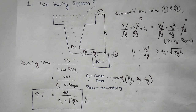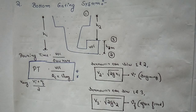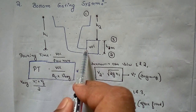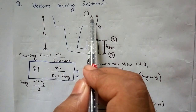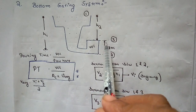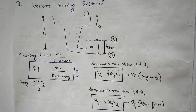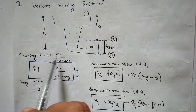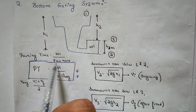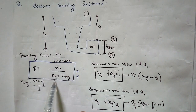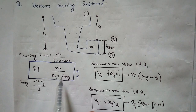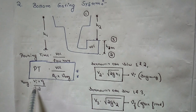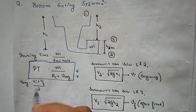Now for the bottom gating system — everything is similar except the ingate enters from the bottom of the mold cavity. The height from the top of the mold cavity to section 1 is h1, the height from the datum to the ingate is h2, and HM is the height of the mold cavity. The pouring time is still volume divided by flow rate, but the flow rate uses AC × V_average, since two different heights are involved.